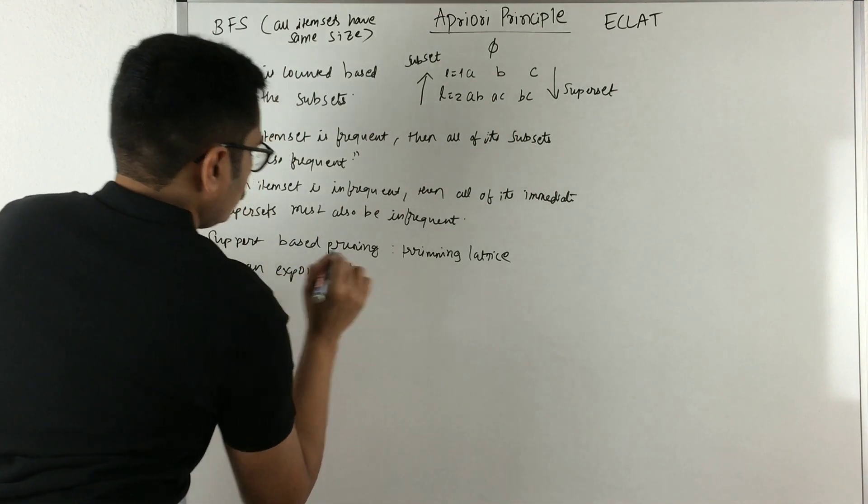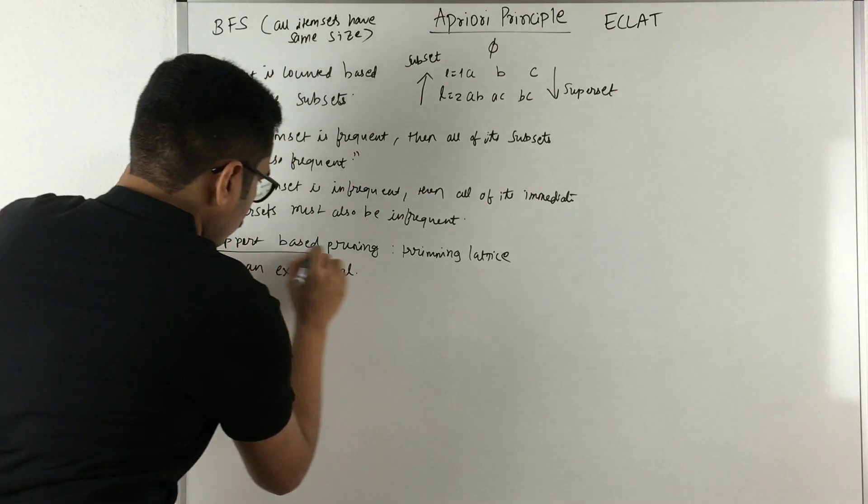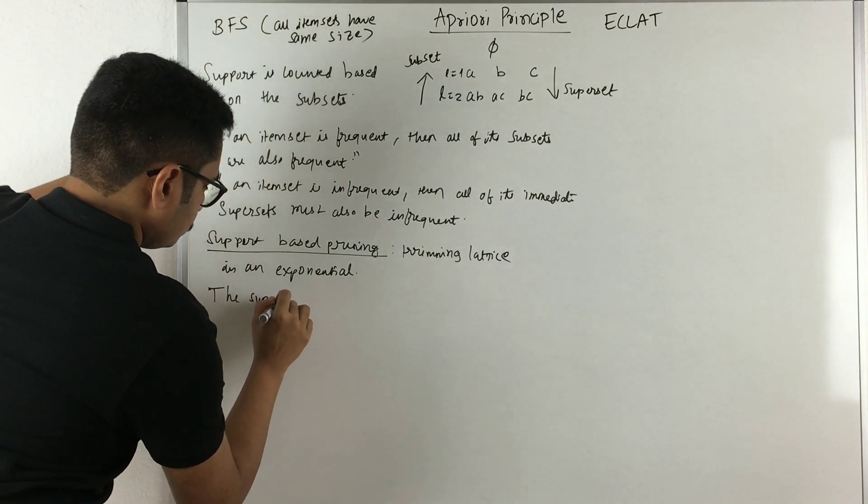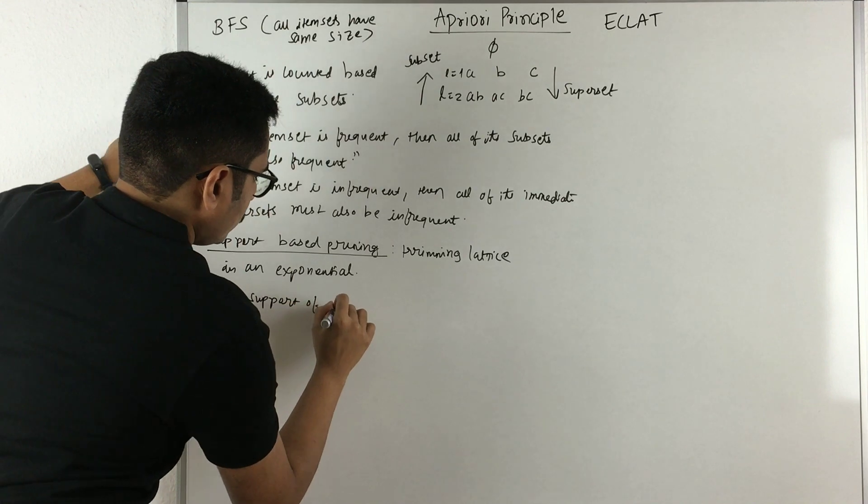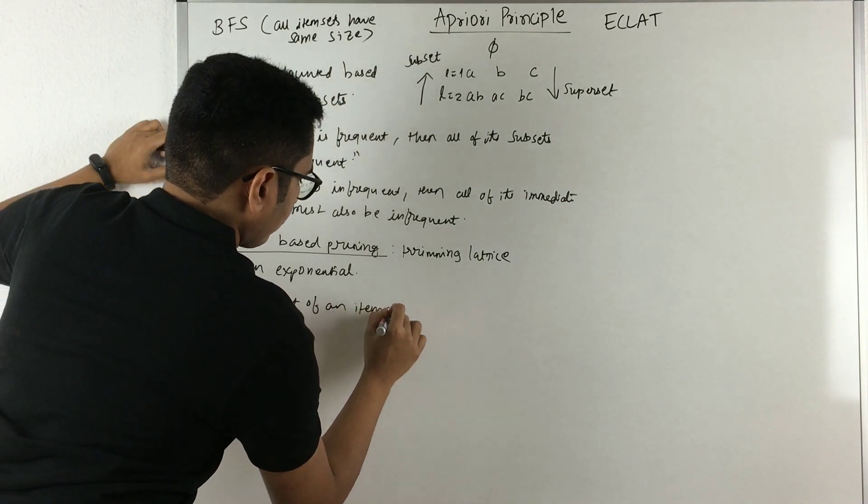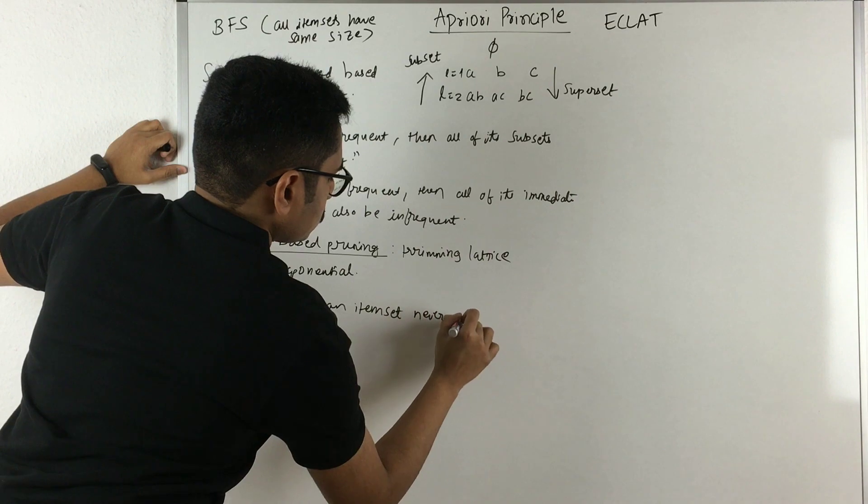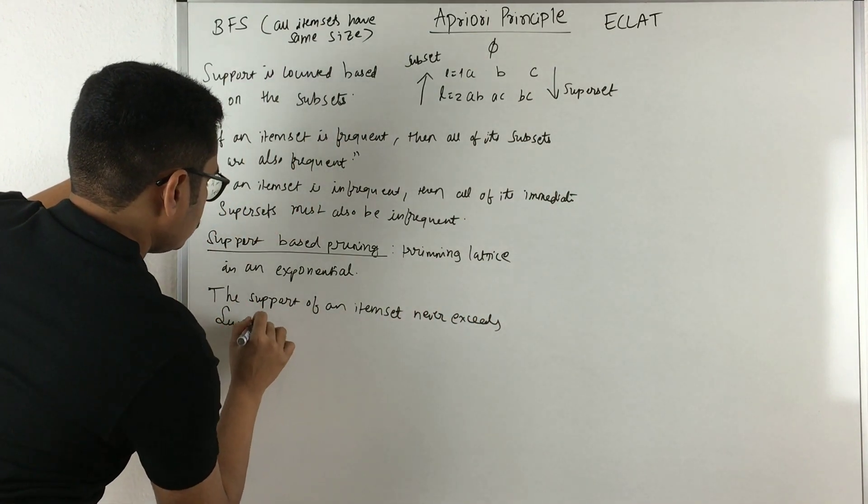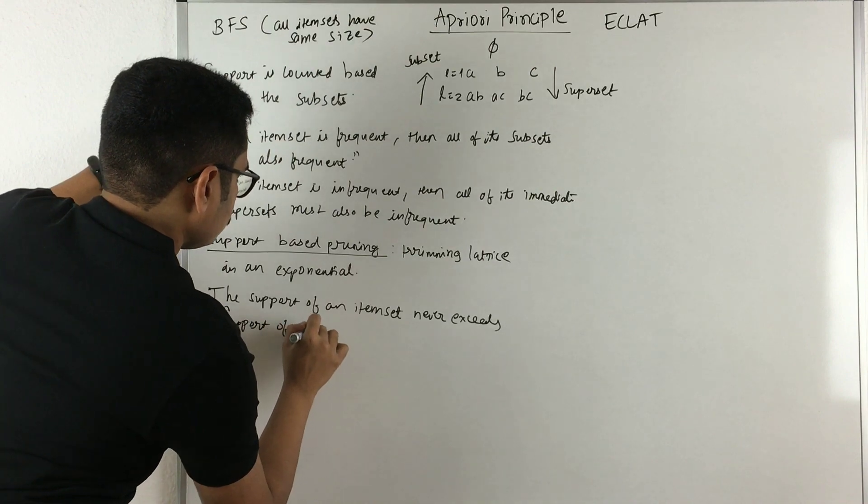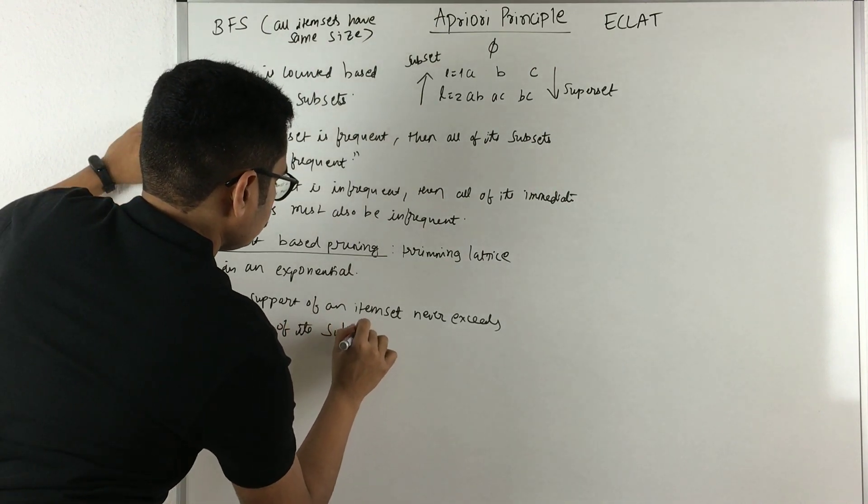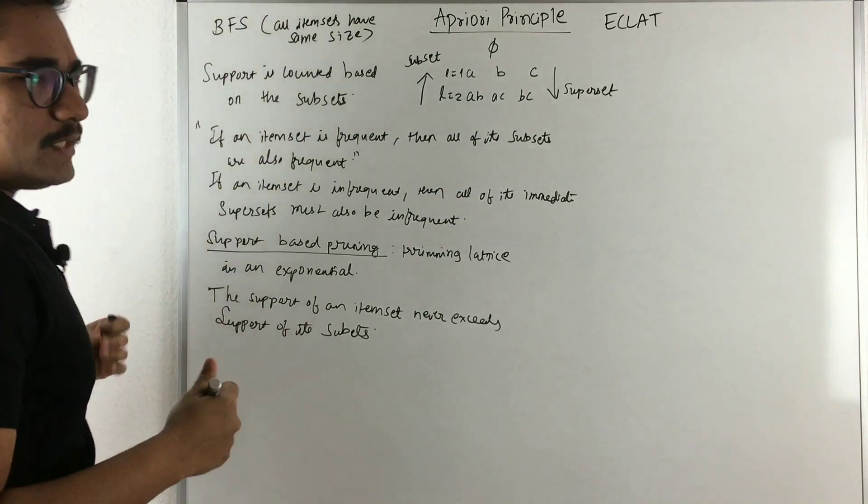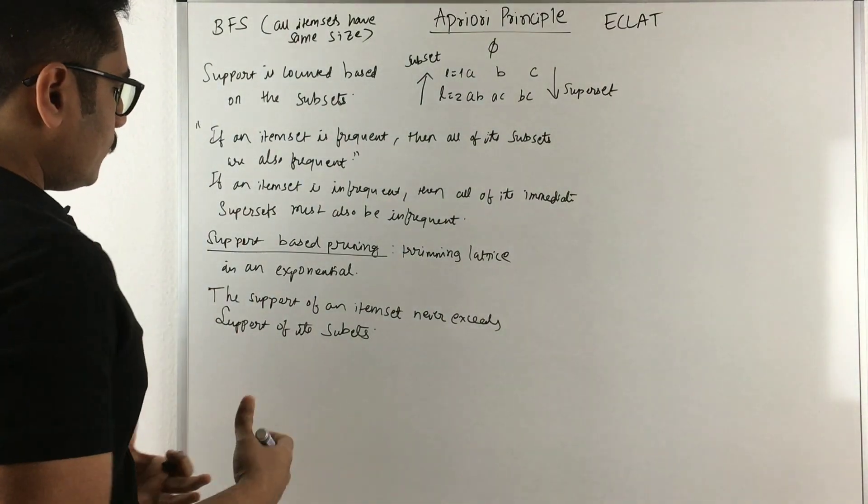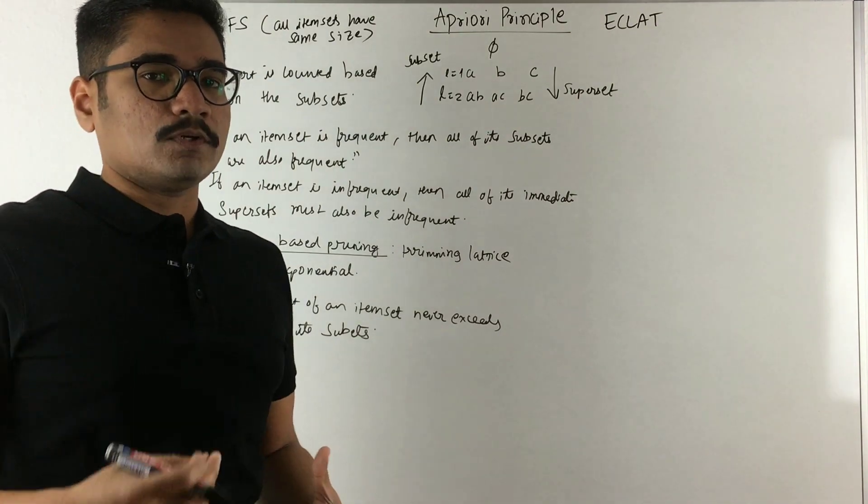What support-based pruning says is that the support of an item set never exceeds the support of its subsets. These definitions will be more clear when we deal with a lattice activity, where we will be dealing with different types of other terms.